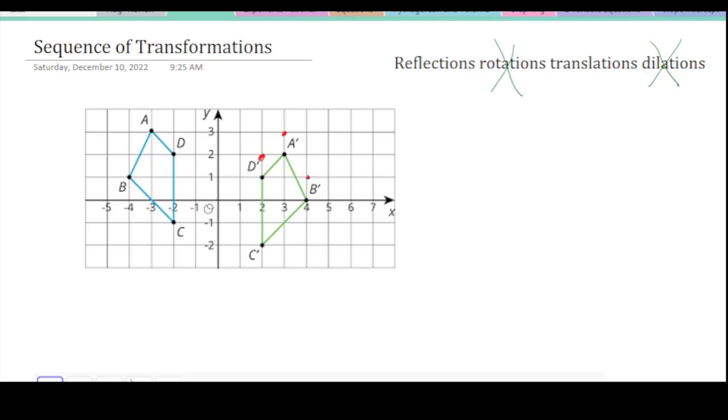Because remember, basically the only thing that happens is the sign changes. This goes from being at negative 2 to being at positive 2. So it looks like a reflection across y got us close to where we want it to be.